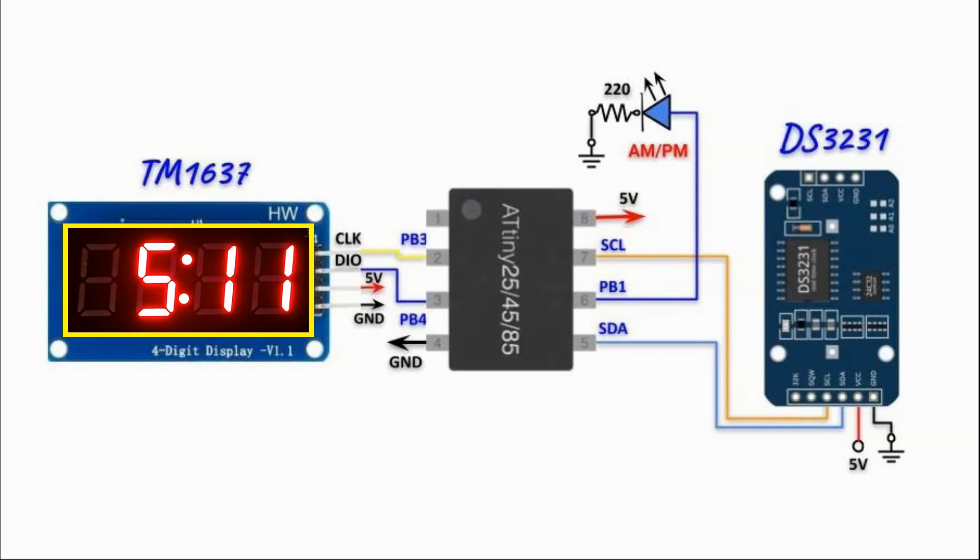In the first part of the project, we have the real-time clock DS3231 interfaced with the ATtiny85 through the I2C lines. We also have a TM1637 display serially interfaced with the ATtiny85 through two digital pins that displays time, date, and temperature.